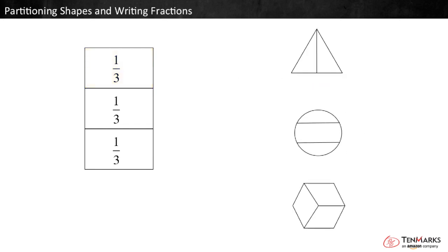Which of these models also has pieces representing one third? The correct answer will have three equal size pieces. The triangle does not have three parts. The circle has three parts, but they are different sizes. And the hexagon has three parts, and they are of equal size, so each piece is one third. This is the correct answer.